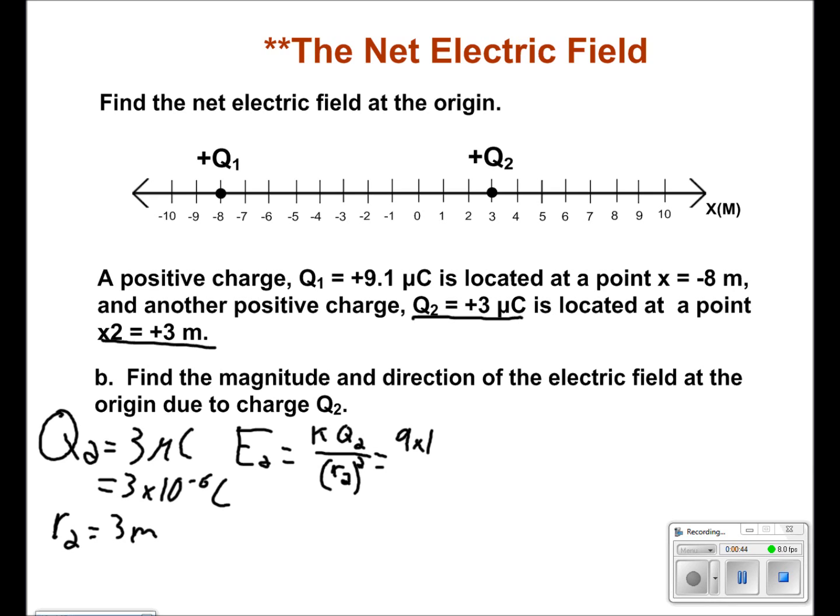We plug in our values, 9 times 10 to the 9th for K, 3 times 10 to the negative 6 for Q2, and 3 for R2. This will give us a value of 3000 newtons per coulomb.